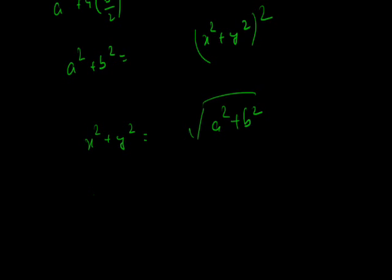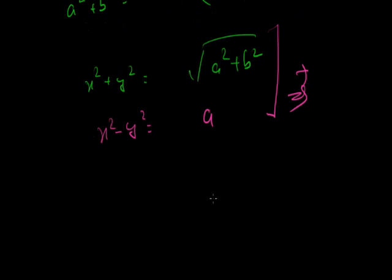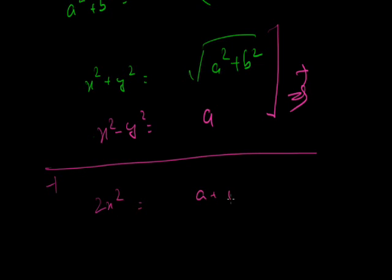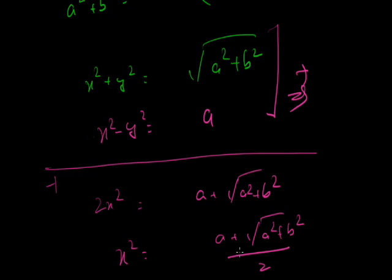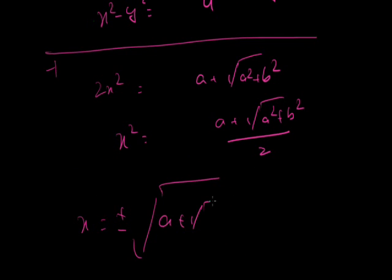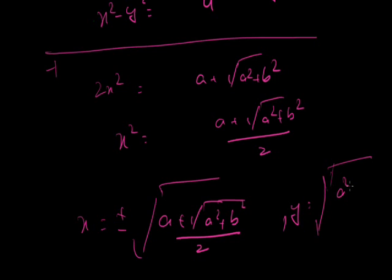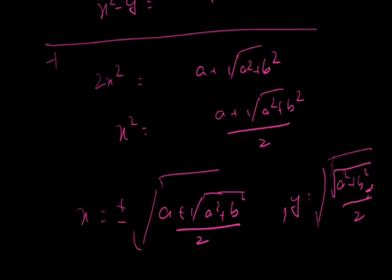So I have two equations: x squared minus y squared equals a, and x squared plus y squared equals the square root of a squared plus b squared. Adding these two equations eliminates y squared. We get 2x squared equals a plus the square root of a squared plus b squared, so x squared equals (a plus square root of a squared plus b squared) divided by 2, and x equals plus or minus the square root of that quantity. Substituting x back gives y as the square root of (square root of a squared plus b squared, minus a) divided by 2.